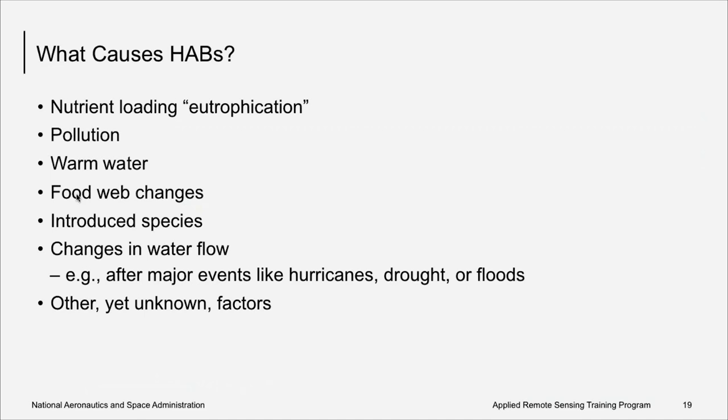As mentioned earlier, phytoplankton growth is often driven by light, nutrients, and temperature. Perturbations in these abiotic factors, as well as in other factors, can lead to harmful algal blooms. Some of these include nutrient loading or eutrophication, pollution, warm water, food web changes such as the loss of a key grazer in a system, introduced species, changes in water flow from events like hurricanes, droughts, or floods, and also some things that we just aren't aware of yet, other unknown factors.